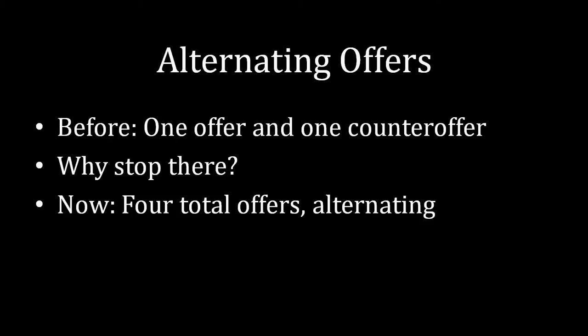Albert will make the first offer. If Barbara doesn't like it, she can reject it and make a counteroffer. If Albert doesn't like that counteroffer, Albert can reject and make a counteroffer of his own. And then if Barbara doesn't like that counter counteroffer, she can reject it and make a last offer of her own. So we're doubling the number of steps, and obviously what we're trying to do ultimately is go even further than that. But one step at a time, what happens when we have four total offers?